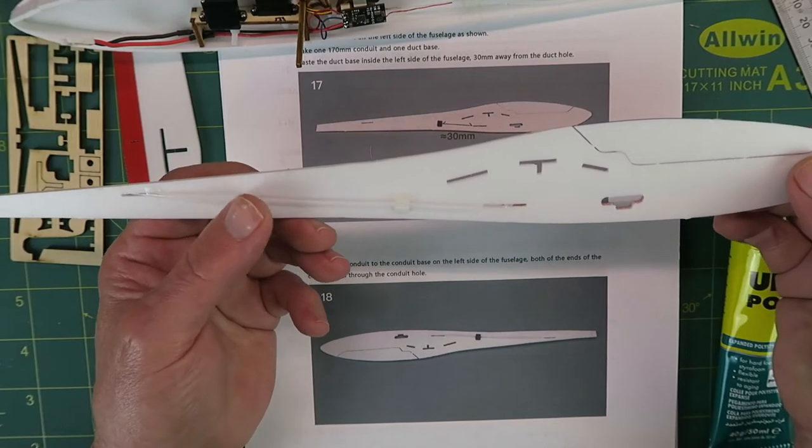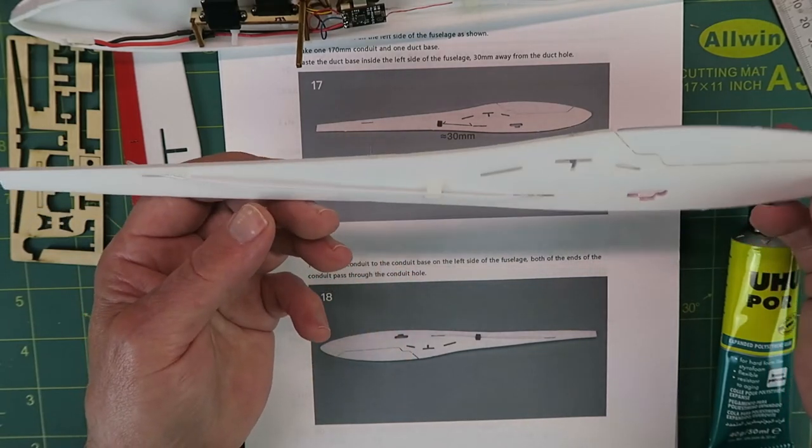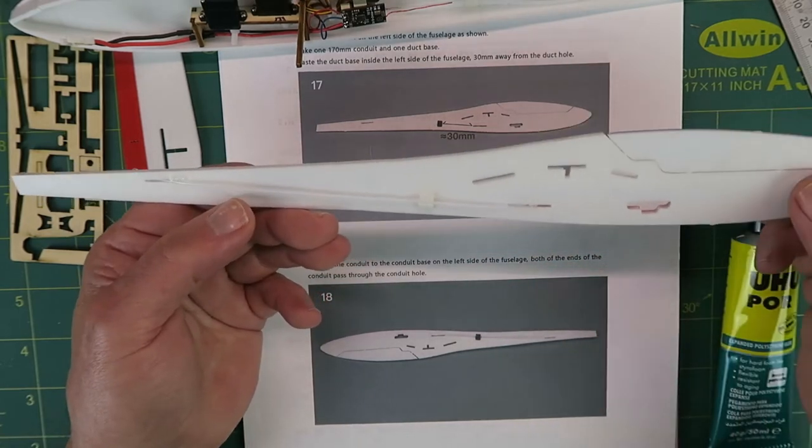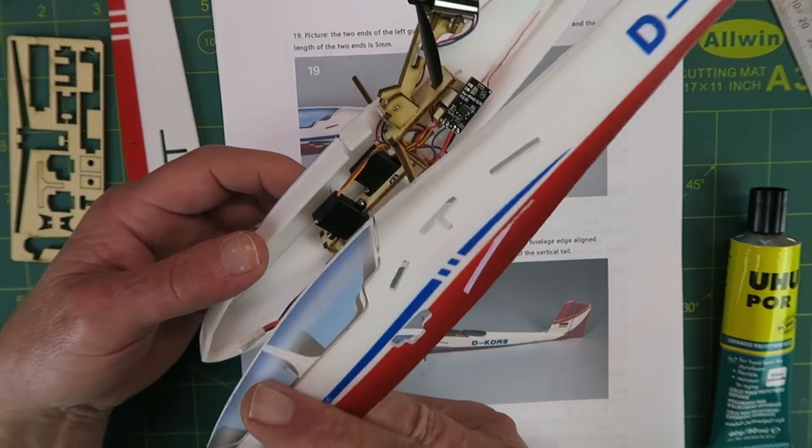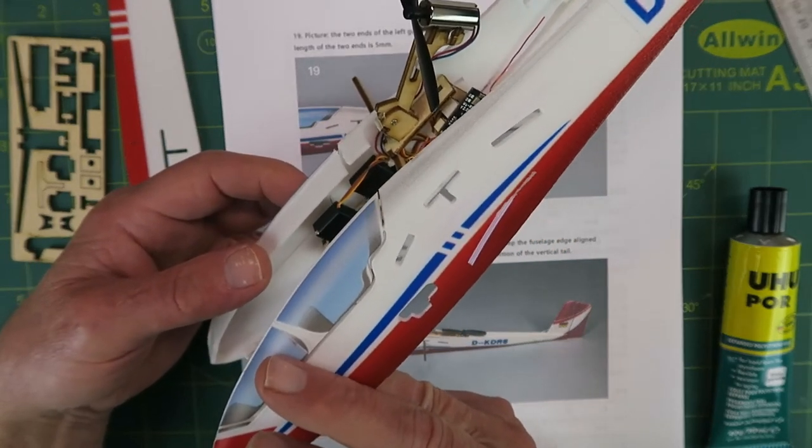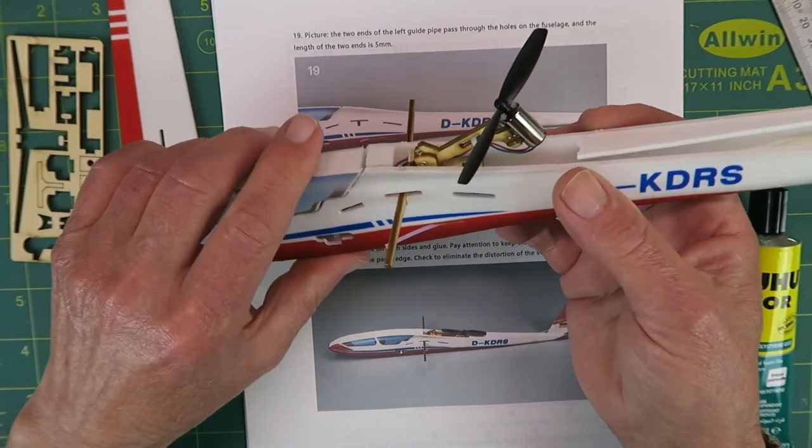The next job then is to glue the second shorter tube for the rudder onto the other side of the fuselage clearly. With that done, it is time to join the two halves of the fuselage together and things are really starting to take shape at this point.